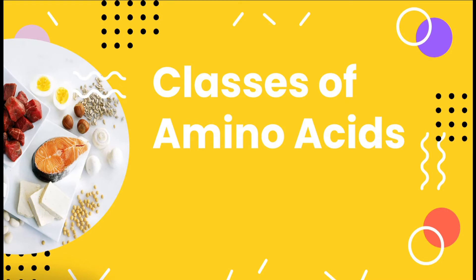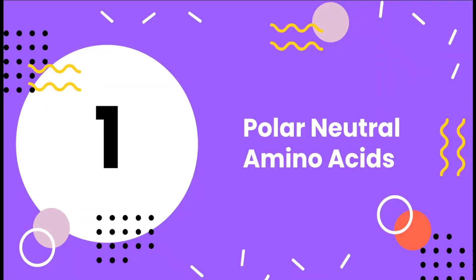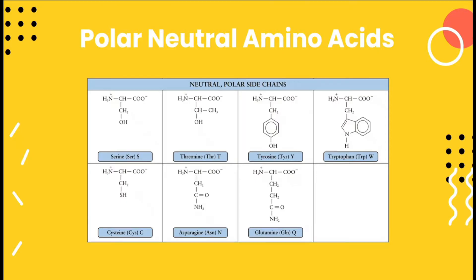We have four classes of amino acids. First, we have the polar neutral amino acids. Here are the seven polar neutral amino acids: serine, threonine, tyrosine, tryptophan, cysteine, asparagine, and glutamine. They can be represented by a three-letter or a one-letter symbol. For serine, it can be represented as SER or an S.